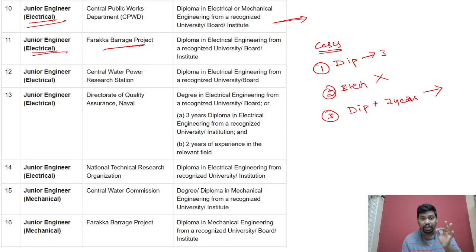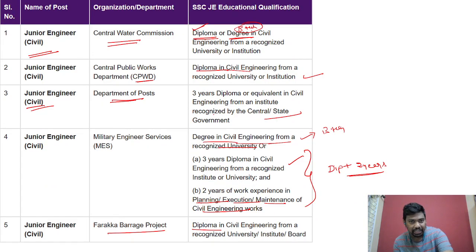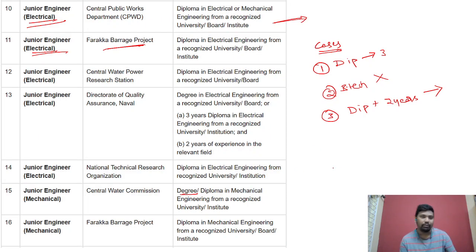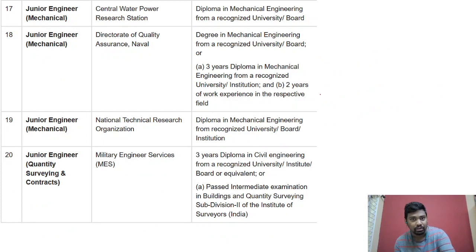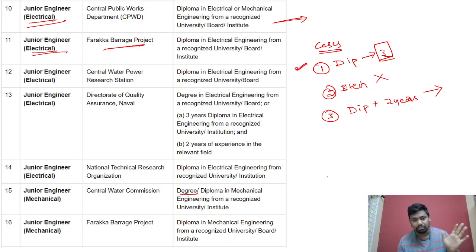In these two cases, suppose I am a diploma student. Degree is not required for electrical or mechanical in some vacancies. Three years diploma is available plus two years experience — make sure they are eligible. But mainly, the priority part is diploma three years. So, with three years of diploma we are eligible for SSC JE. Some departments are purely degree-based.